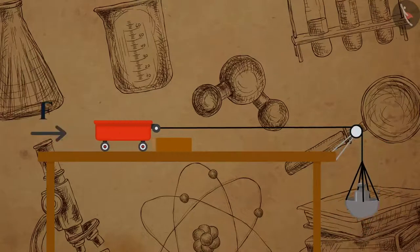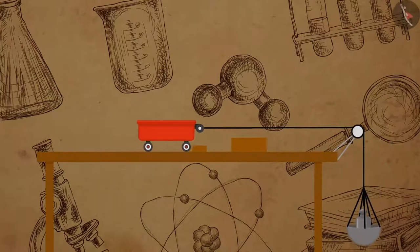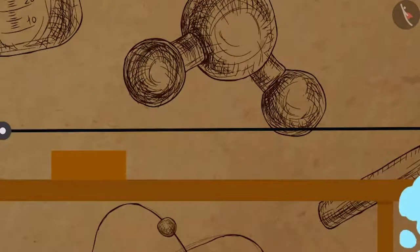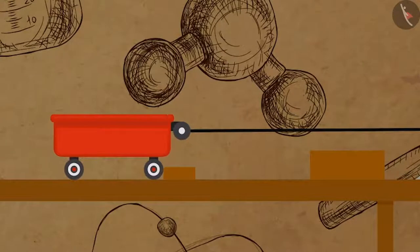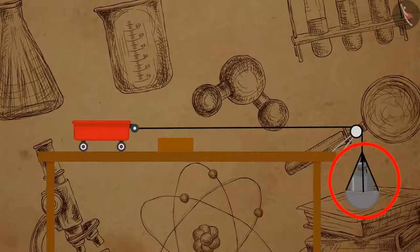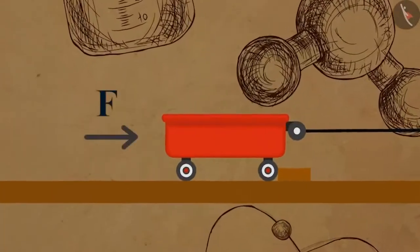The trolley hits the wooden block and displaces it to a certain distance. Put a stop to the trolley after it hits the block and note the displacement of the block. The block was displaced as it gained energy after work was done on it by the trolley. Can you tell from where this energy comes? Now repeat this experiment by increasing the mass on the pan — you will notice that with the increase in mass on the pan the displacement of the block increases, showing the increase in work done by the trolley.